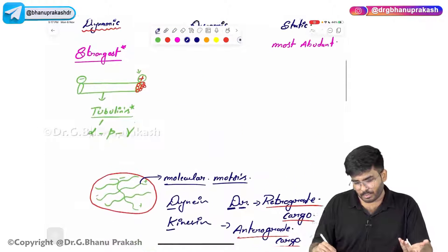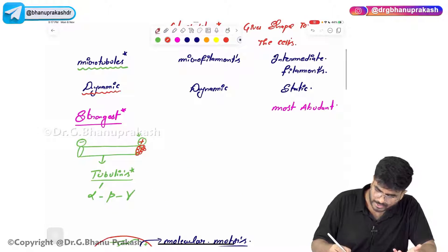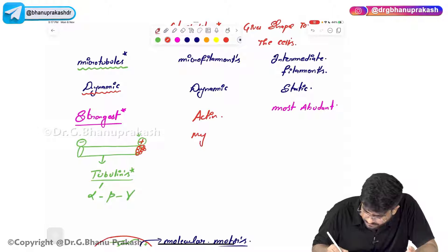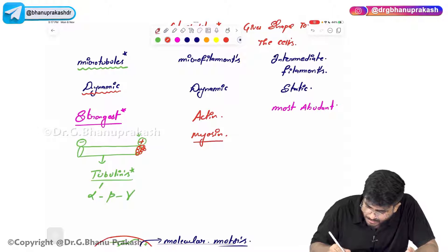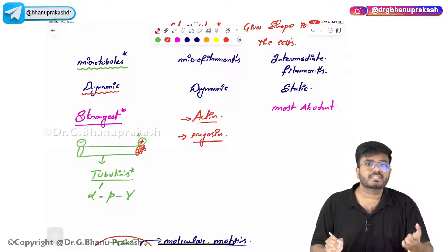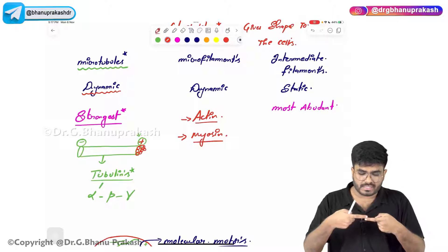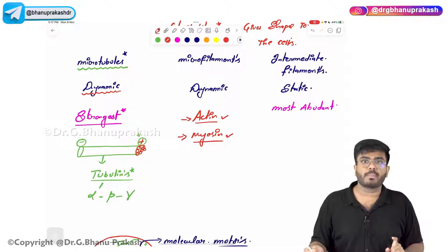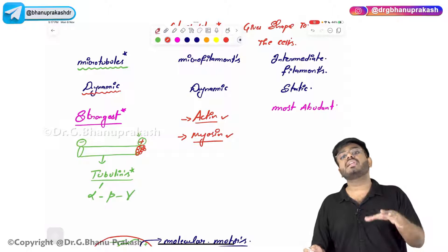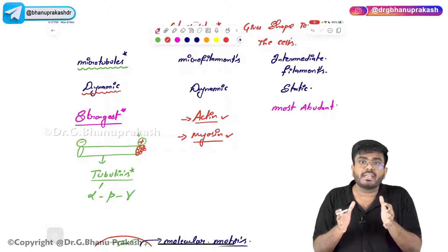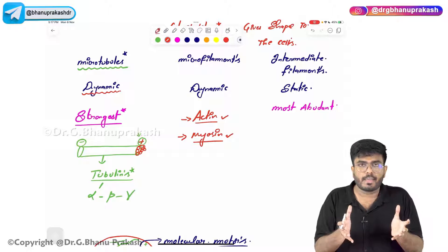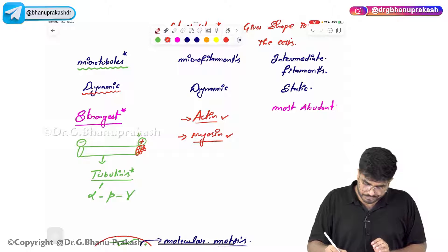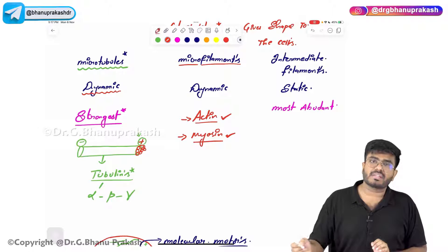Microfilaments — the examples are actin and myosin. These are not the same actin and myosin involved in muscle contraction via the sliding filament theory. These are cytoskeletal actin and myosin which give structural integrity to the cell, and they are present in all cells.